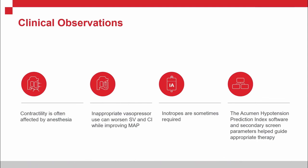To round up: contractility is often affected by anaesthesia, making measurement of DPDT an important parameter. Inappropriate vasopressors can worsen stroke volume and cardiac index whilst improving MAP, and unless we look at our advanced monitor — particularly stroke volume and contractility — this is very hard to detect. Sometimes inotropes are required because decreased inotropy is the underlying physiological condition leading towards hypotension. The Hypotension Prediction Index software and secondary parameters help guide appropriate therapy in this case. However, the index itself should not be used to make clinical decisions — it is the underlying physiology that we treat.